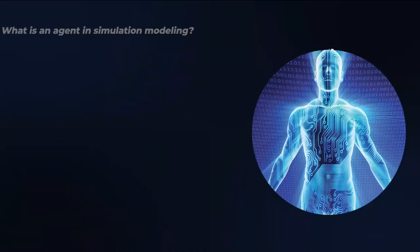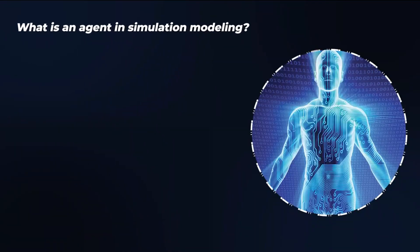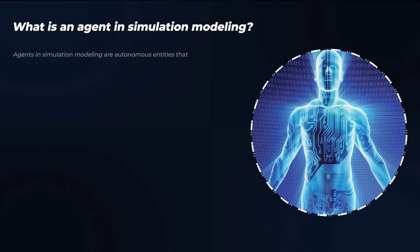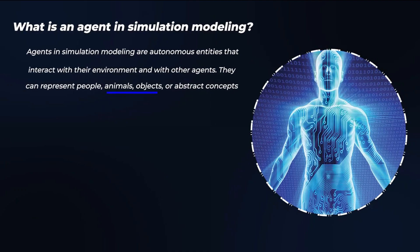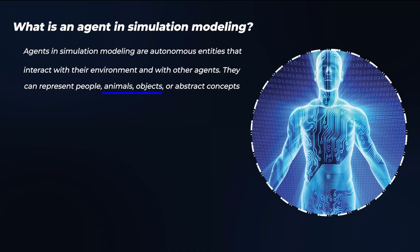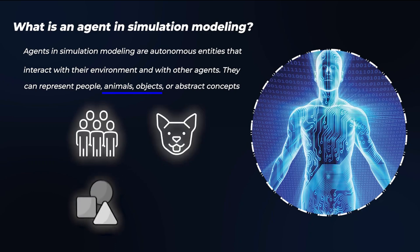What is an agent in simulation modeling? Agents in simulation modeling are autonomous entities that interact with their environment and with other agents. They can represent people, animals, objects, or abstract concepts.